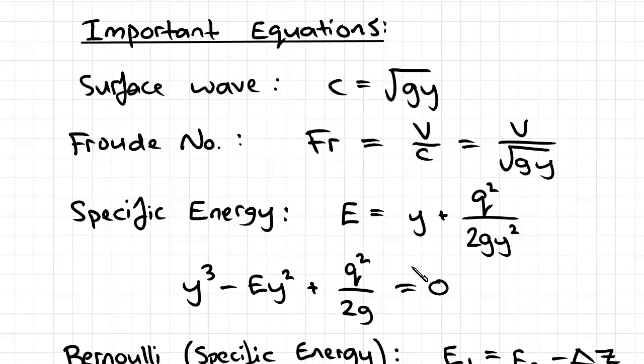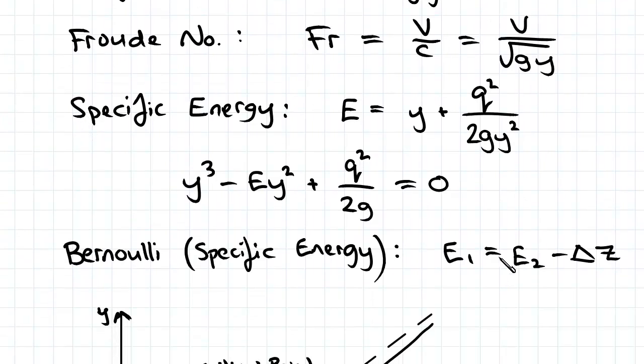Now the specific energy equation led us to simplify a quite complicated equation into E1 equals E2 minus delta Z.